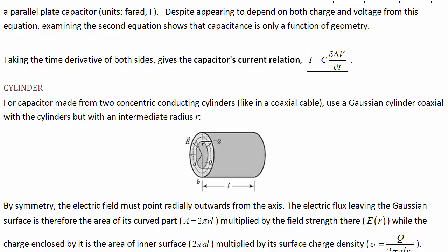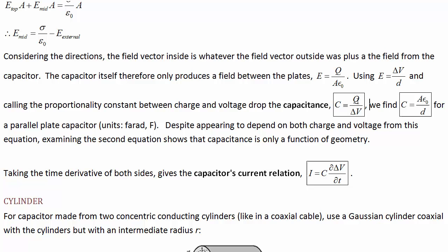A lot of students get confused and think that if you double the potential difference across a capacitor, the capacitance drops by a factor of two. But that's wrong. Capacitance is a constant that depends only on geometry — things like the area of the plate, the permittivity, the distance between the plates, and the dielectric. It doesn't depend on the charge or voltage. The equation C = Q / delta V expresses the idea that charge is proportional to the voltage across a capacitor. Capacitance is a constant.